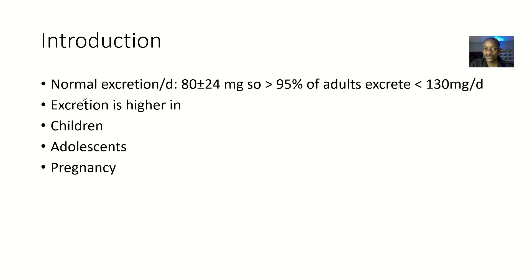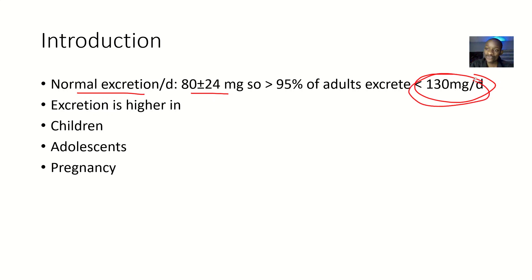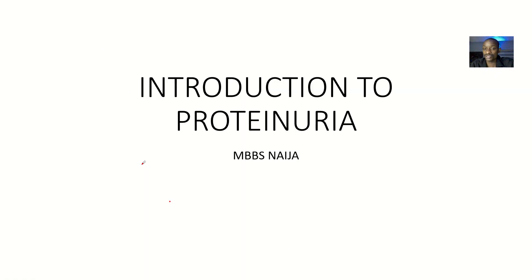Normal excretion of protein in urine is about 80 milligrams per deciliter. If the person is excreting 130 milligrams per deciliter, there is usually a problem. The normal is 80 plus or minus 24 milligrams per deciliter. Once anything goes above 130, there is proteinuria. The normal excretion threshold is also considered higher in children, adolescents, and pregnant women. The normal value is 80 plus or minus 24, and once it goes above 130, there is usually a problem.